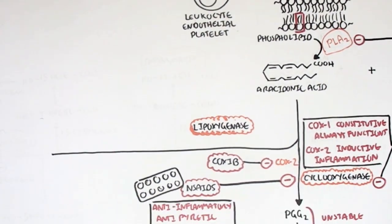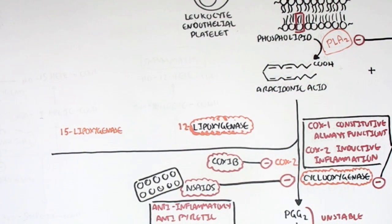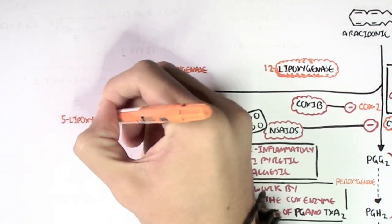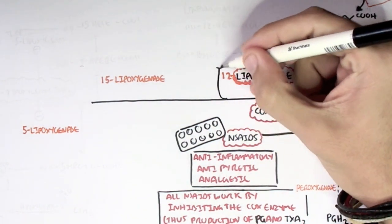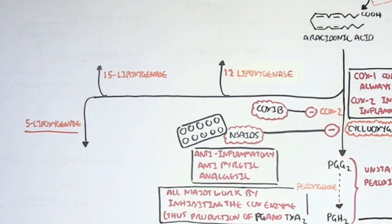There are a few lipoxygenases. There is 12-lipoxygenase, there is 15-lipoxygenase and there is 5-lipoxygenase. These are the main ones, specifically 5-lipoxygenase because 5-lipoxygenase is what produces the leukotrienes which is one of the main inflammatory mediators in our body.